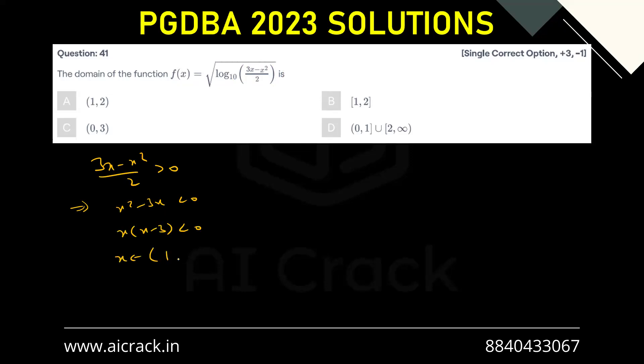That was our first condition. The second condition is anything inside the square root should be either 0 or positive.